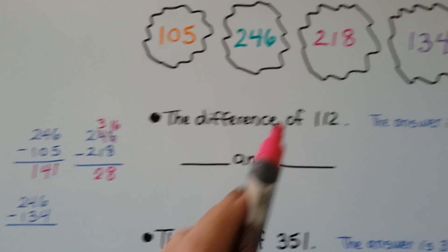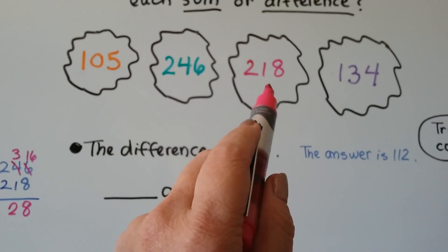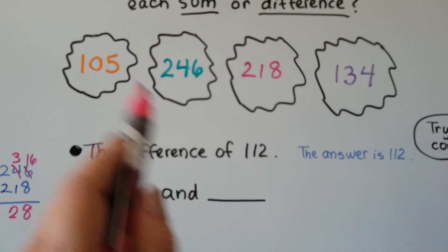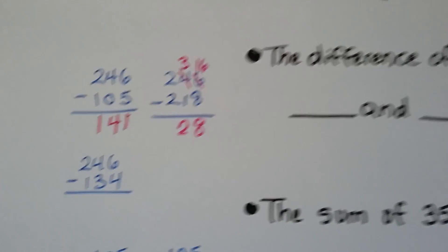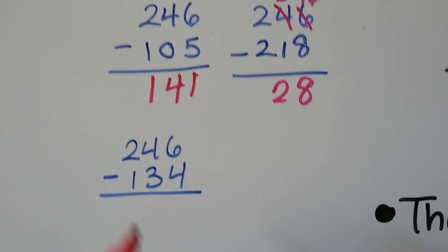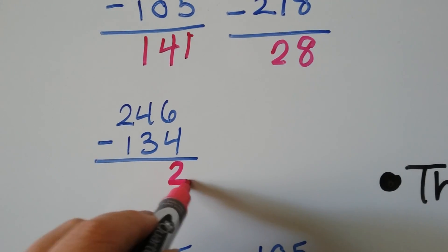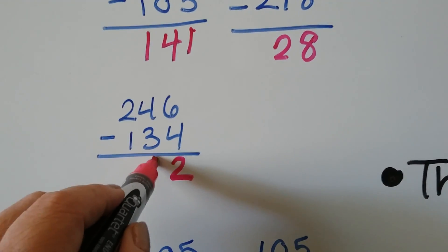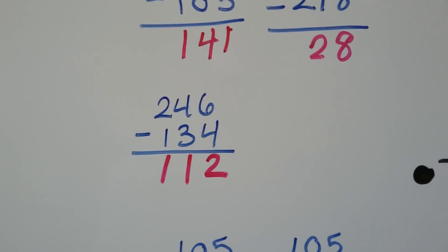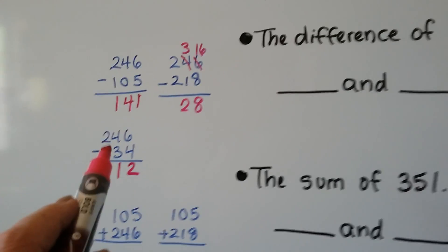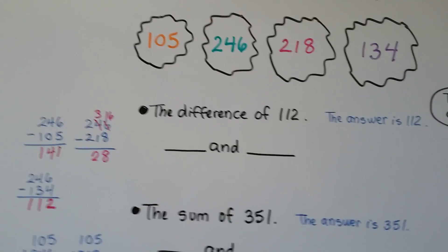Let's try 246 minus 134. It could also be 218 minus 105, or 218 minus 134 — we might even have to try that. So let's try 246 minus 134. 6 minus 4 is a 2, 4 minus 3 is a 1, and 2 minus 1 is a 1. It is 112! So we know the two numbers are 246 and 134.